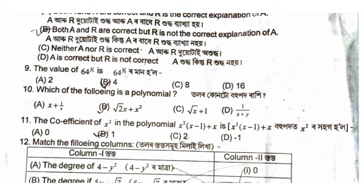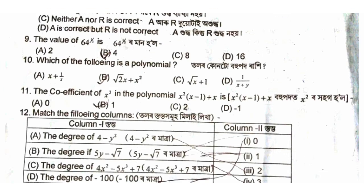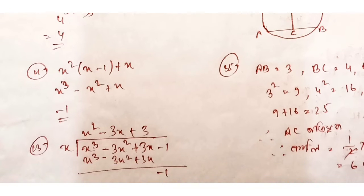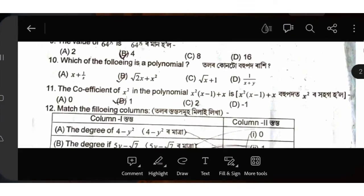We are talking about a total number. This is 0 times 0. Option B2: root 2x plus x squared. The coefficient of x squared in the polynomial x squared multiplied by x minus 1 plus x. x squared times x squared.